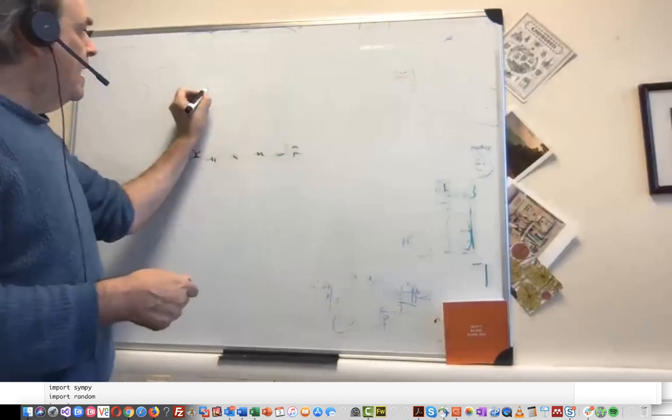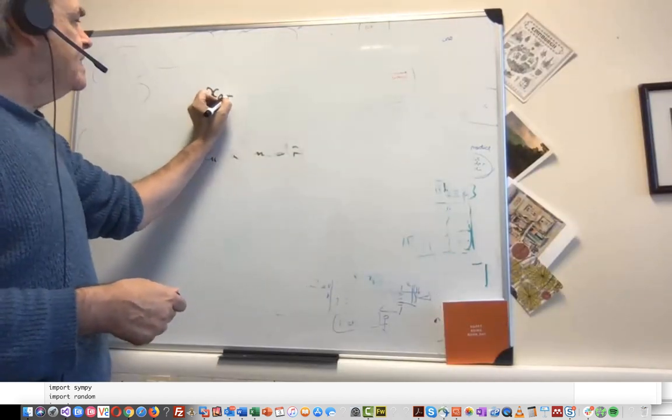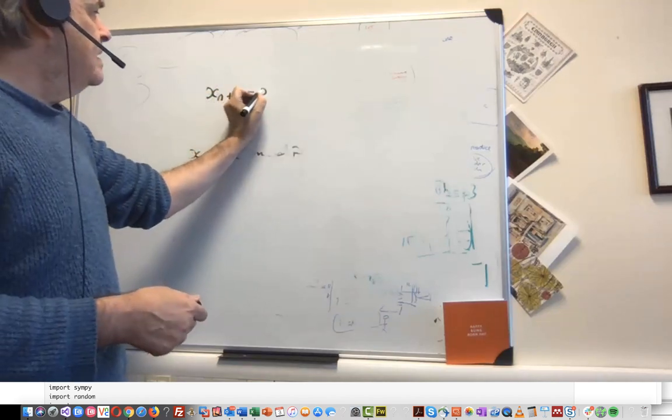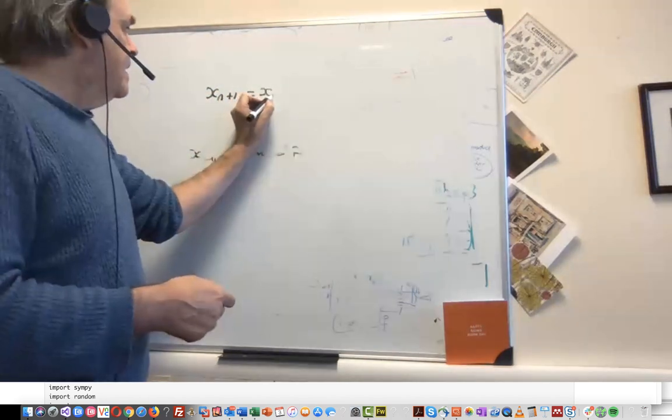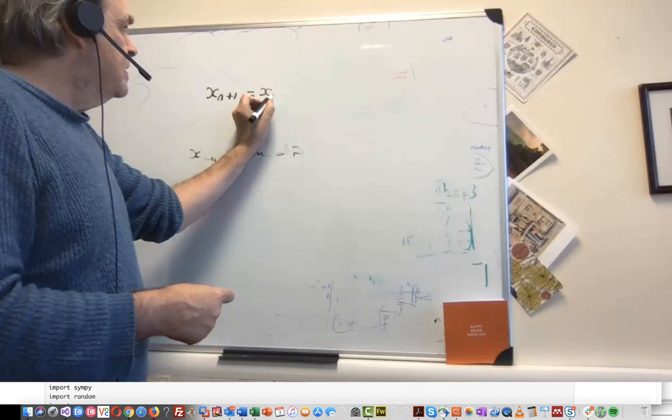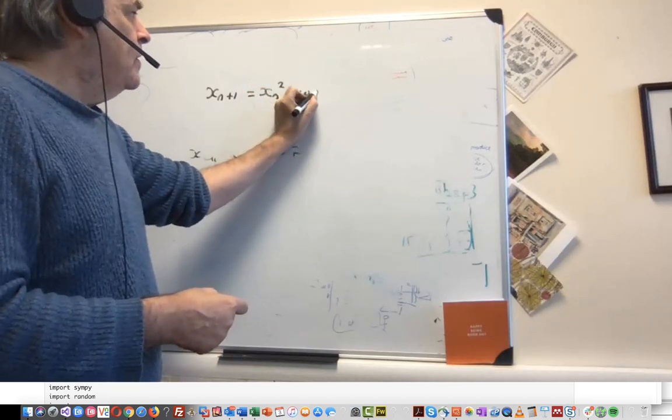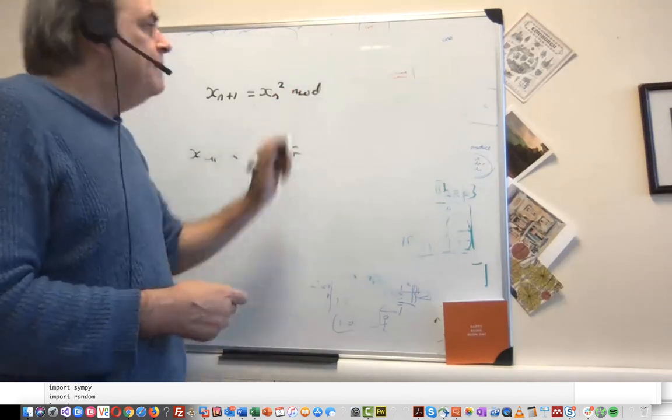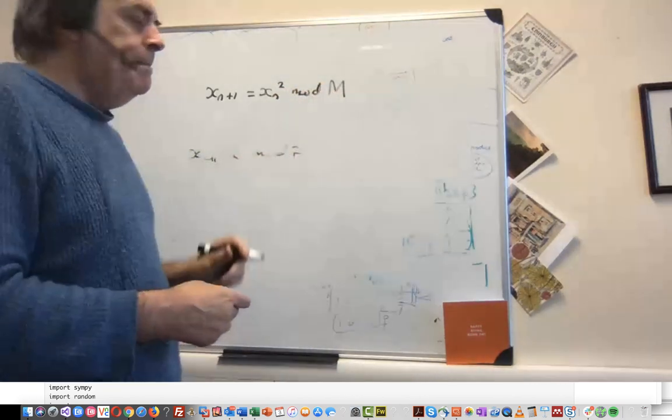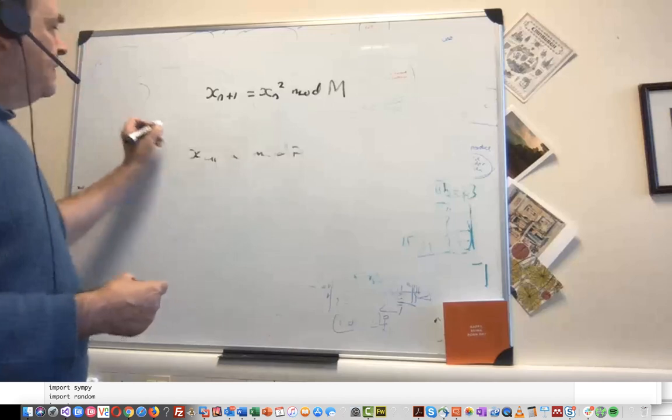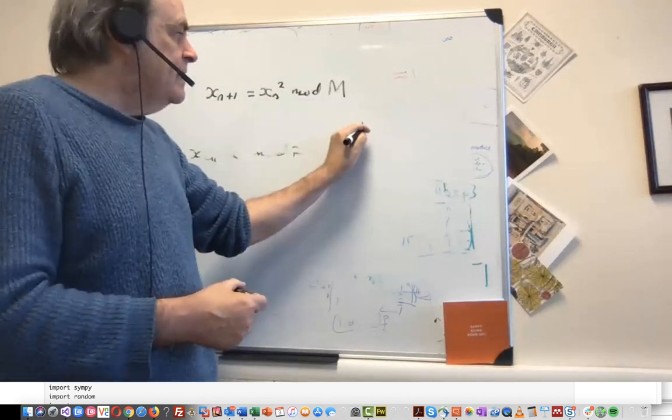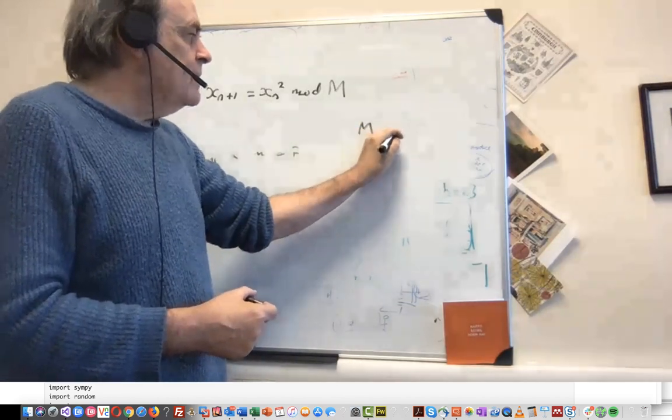It is equal to x_n squared mod of a value m. The value of m is defined as the multiplication of two prime numbers.